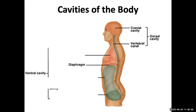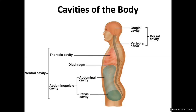Then we have the ventral cavity. The ventral cavity is broken up into two parts by the diaphragm: into the abdominal pelvic cavity and into the thoracic cavity. The abdominal pelvic cavity is broken up even further into the abdominal cavity and the pelvic cavity. All of these cavities will be used for referencing where we see distinct organs.